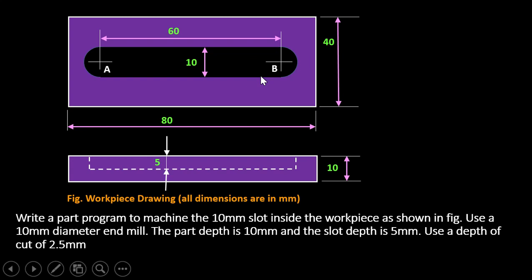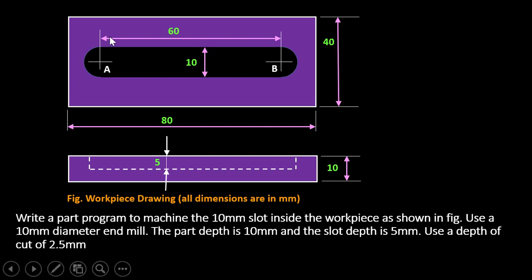This slot is 10 mm wide inside the workpiece as shown in the figure. We have to use a 10 mm diameter end mill. The part depth, meaning the workpiece thickness, is 10 mm, and the slot depth is 5 mm.